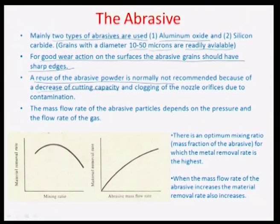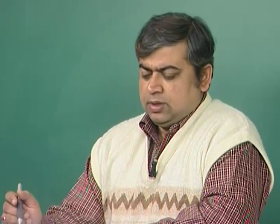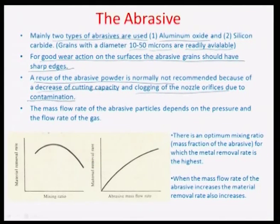Clogging of the nozzle is also an important concern, as the orifice is very small. If there is metal-coated grain being recirculated, there is always a possibility of clogging the nozzle, totally changing process characteristics due to reduced effective area. Therefore, contamination is prevented and reuse of abrasive powder is normally not recommended.